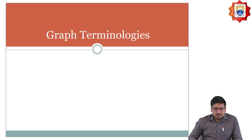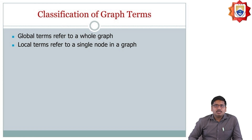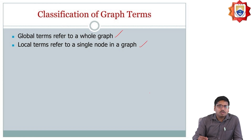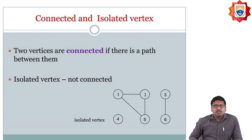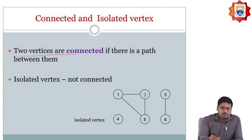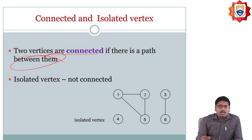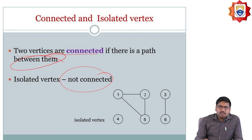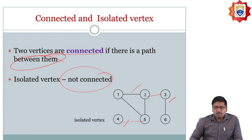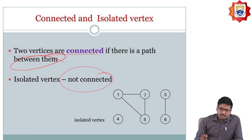Graph terminology: global terms are going to be referred for the whole graph and local terms are going to be referred for the single node. The first one is connected and isolated vertex. Connected means two vertices are said to be connected if there is a path between them. Isolated vertex is nothing but a vertex that is not connected. Once there is no link that exists between them, they should be non-connected.